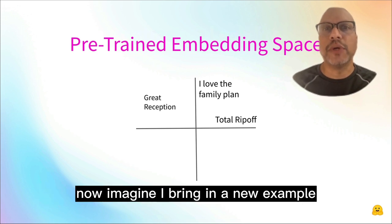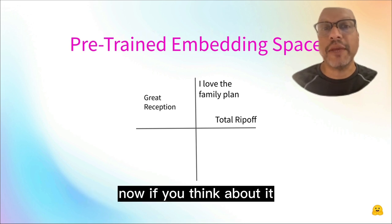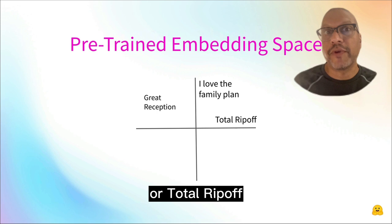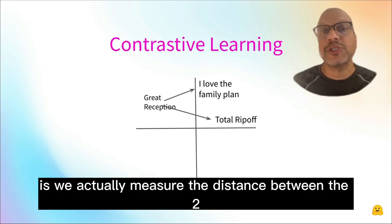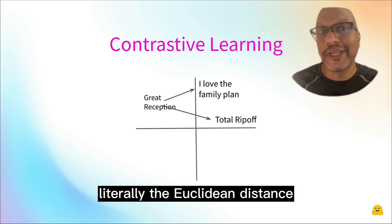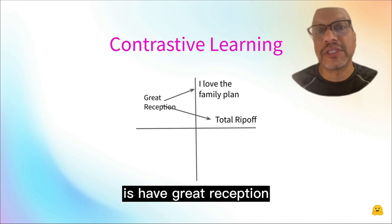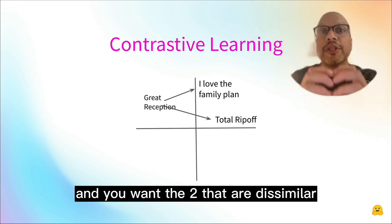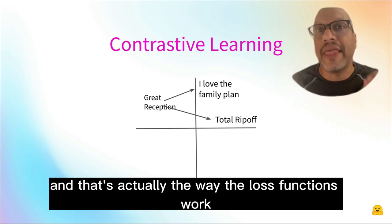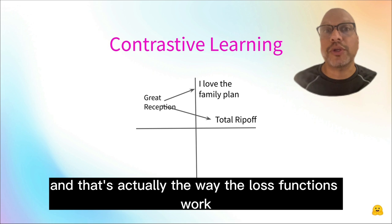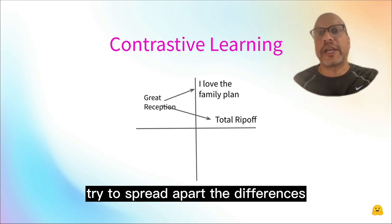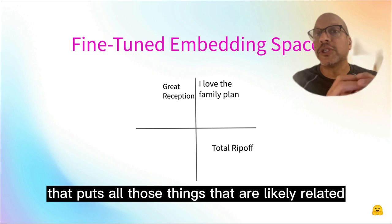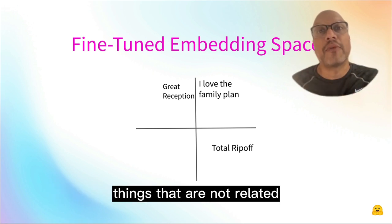Now imagine I bring in a new example: 'Great reception.' Where is 'great reception' more related to — 'I love family plan' or 'Total ripoff'? With contrastive learning, we actually measure the distance between the two — literally the Euclidean distance. We want 'great reception' to be very close to 'I love the family plan' because they're in the same category, and the two that are dissimilar very far apart. That's how the loss functions work in contrastive learning — putting similar things together, spreading apart the differences.